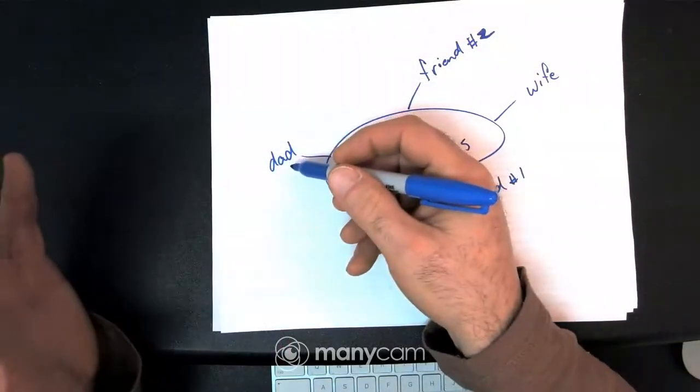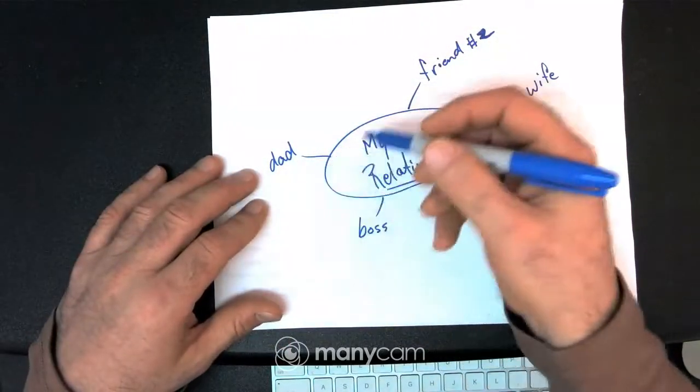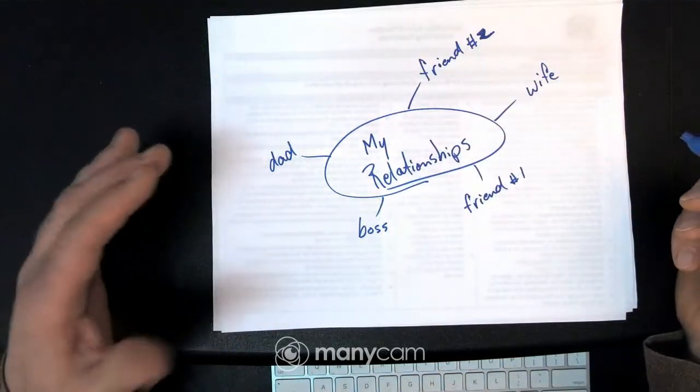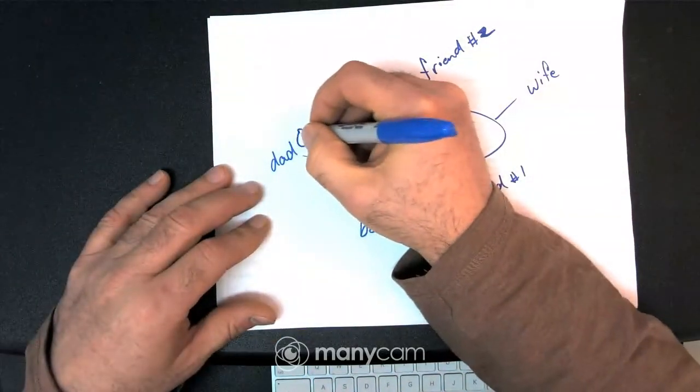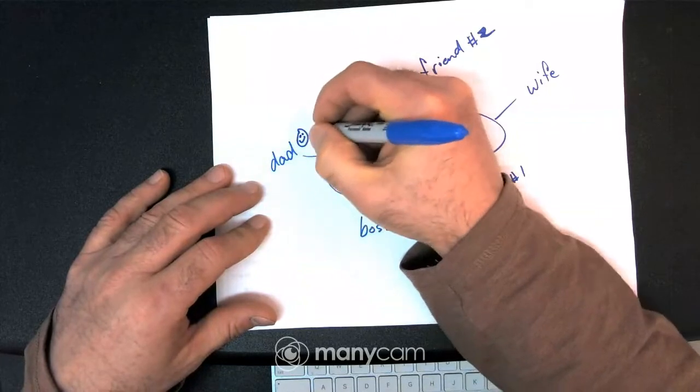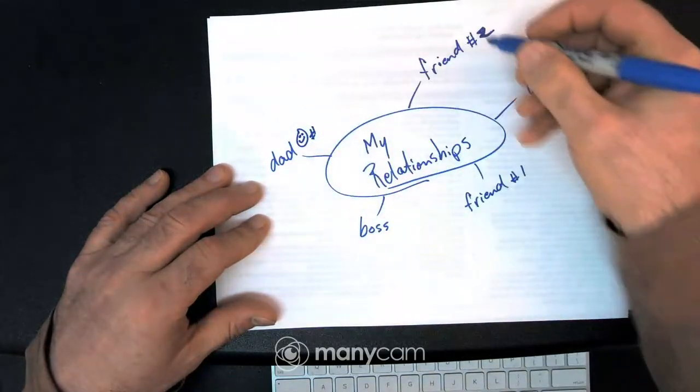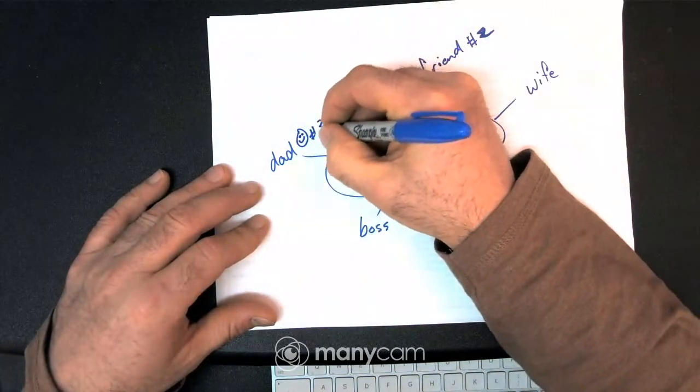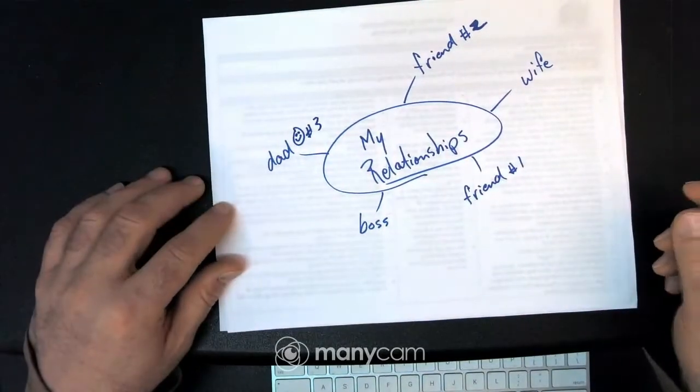For like, if it's dad and you don't want to put dad, you can put parent or just something to identify them. You can even put a little happy face and put number. I already have friend one, friend two. You can put number three. However you want to identify them.